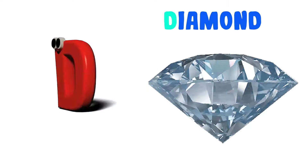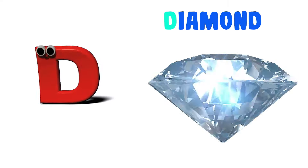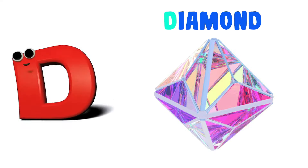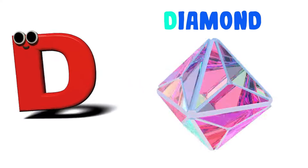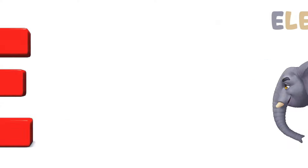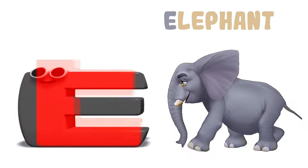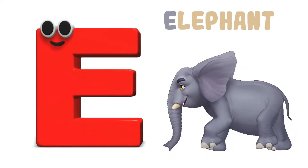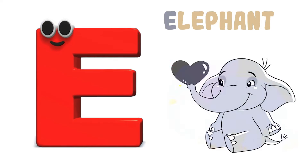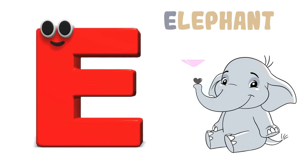D is for Diamond. D, diamond, D, diamond, D, diamond. E is for Elephant. E, elephant, E, elephant, E, elephant.